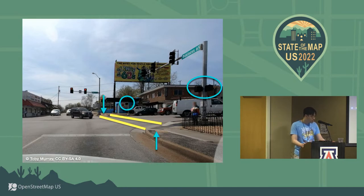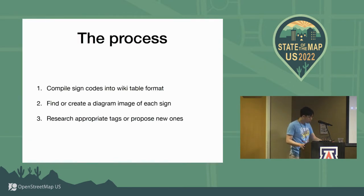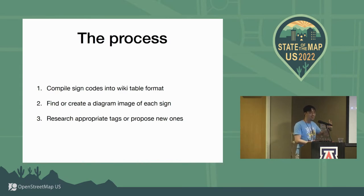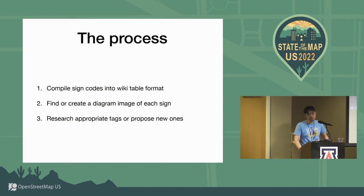These discrepancies are a key source of conflict within the OSM community, and I think that's why we should raise awareness of our reality so that others don't mistake our mapping practices for backwardness. Compiling the MUTCD tables on the wiki is a three-step process. First, you need to read and digest the very large MUTCD standard and convert its sign codes into tables. Then you need to find or create a diagram — an image of each sign — and figure out what tags you should be using with them. If there aren't any tags in use for a particular sign, you need to propose one.